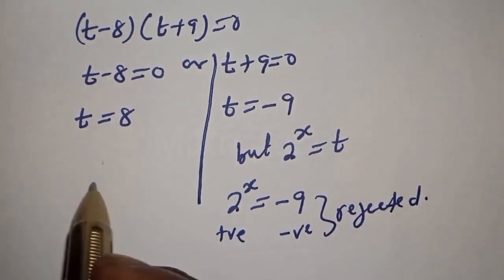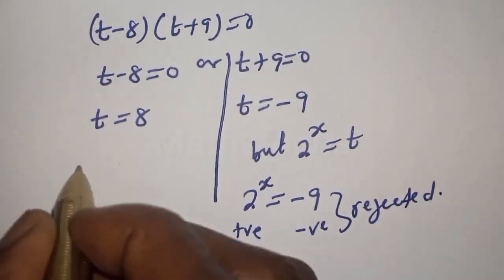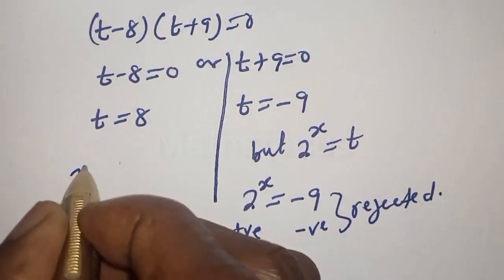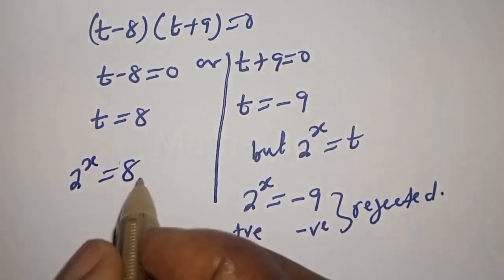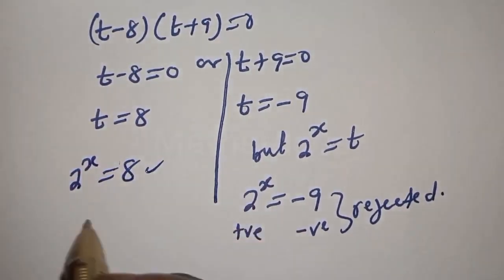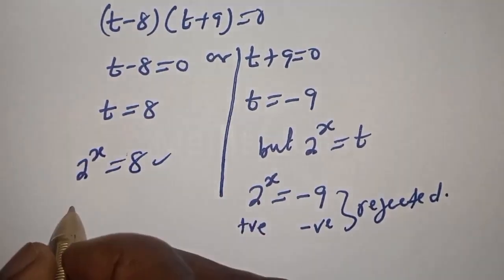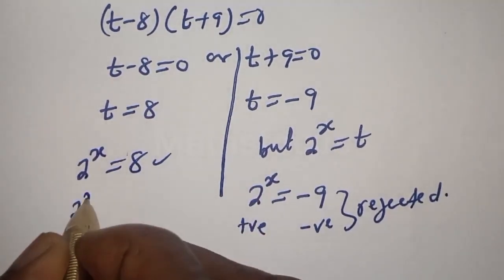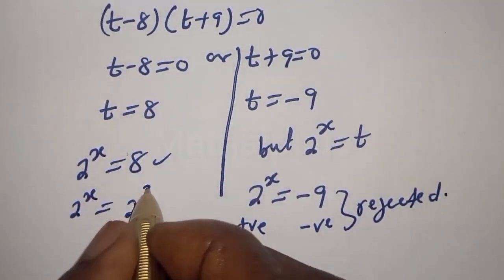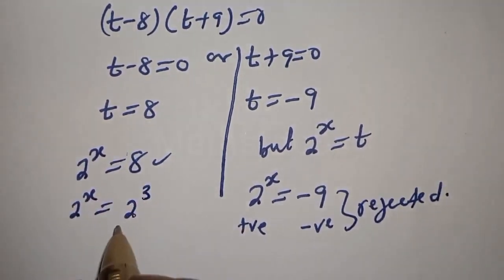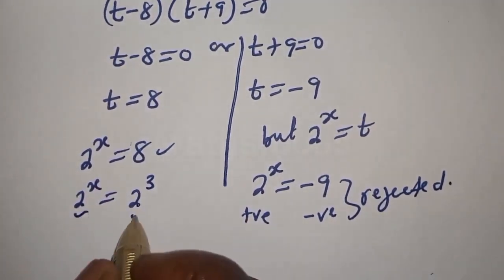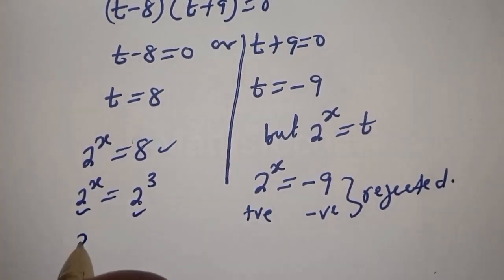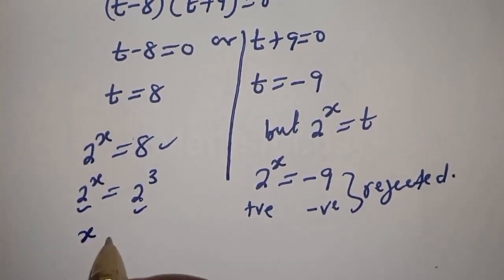From the other case, we have 2 raised to power s is equal to 8. This can be written as 2 raised to power s equals 2 raised to power 3. Since they have the same base 2, s is equal to 3. This is the final answer.